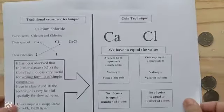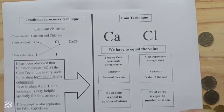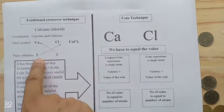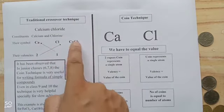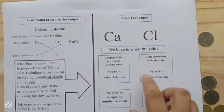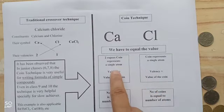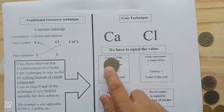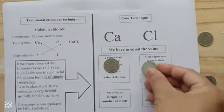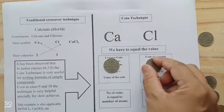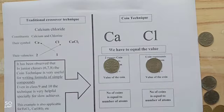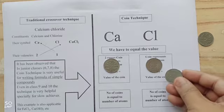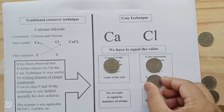Now, calcium chloride. In the traditional method, the valency of calcium is 2, chlorine is 1, and the formula is CaCl2. In the coin method, calcium has valency 2, so we take a 2 rupees coin. Chlorine has valency 1, so I take a 1 rupee coin. Now we have to equal the value. How can we equal the value? We need another 1 rupee coin.